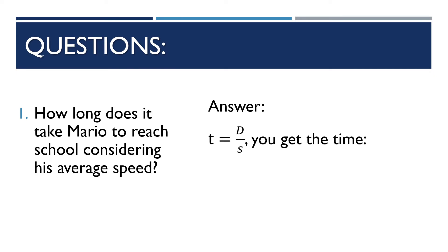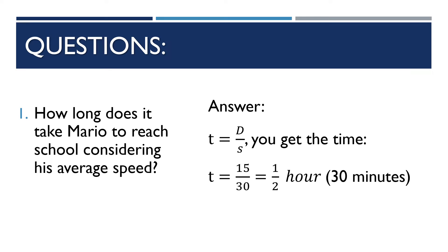Question 1: How long does it take Mario to reach school at his average speed? Using the formula T = D/S, time equals distance over speed. T = 15/30 = 1/2 hour, or 30 minutes. So it takes Mario 30 minutes to reach school at an average speed of 30 km/h.